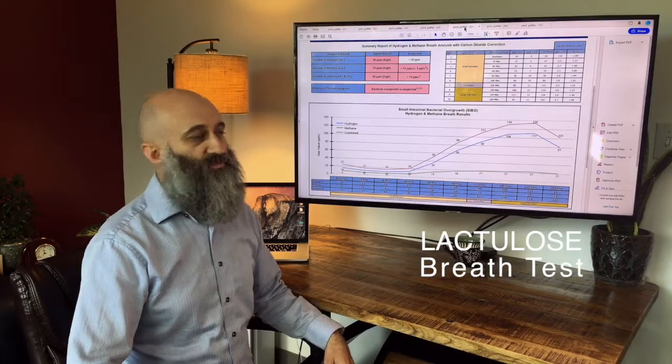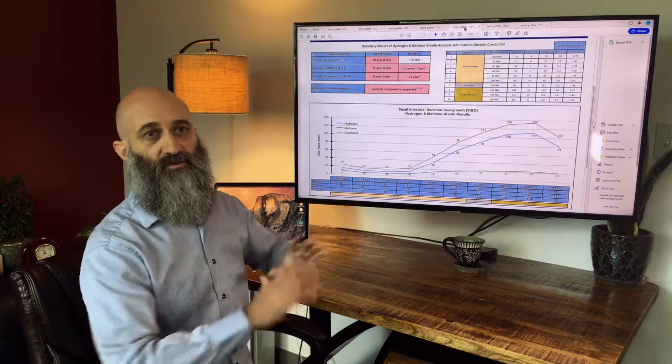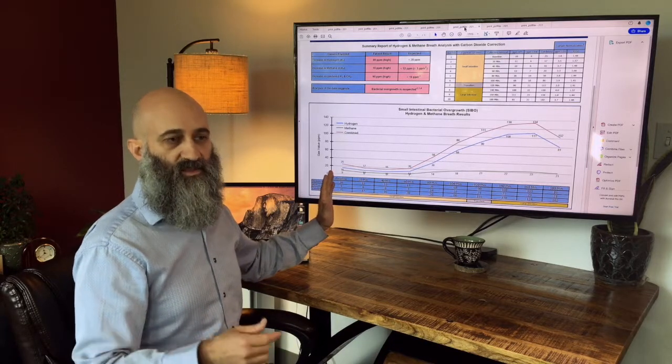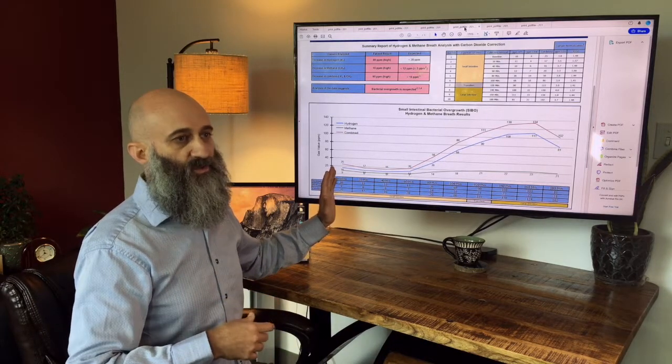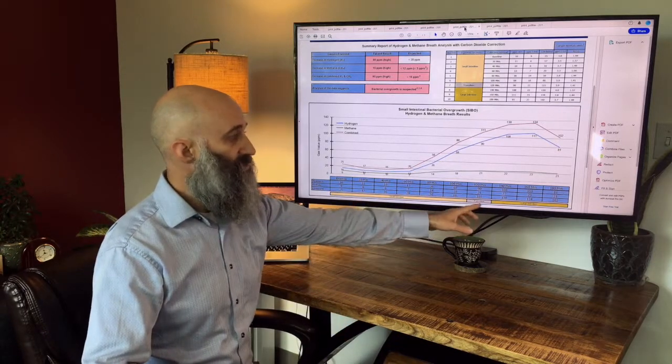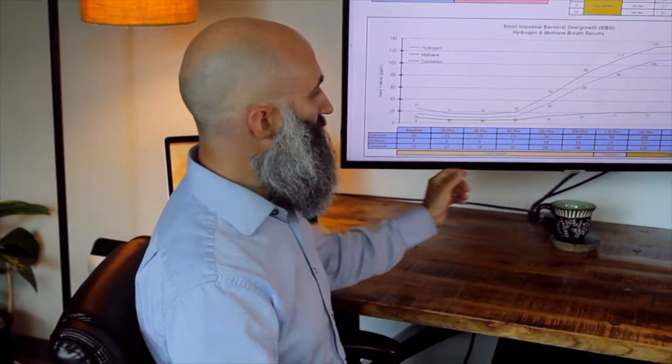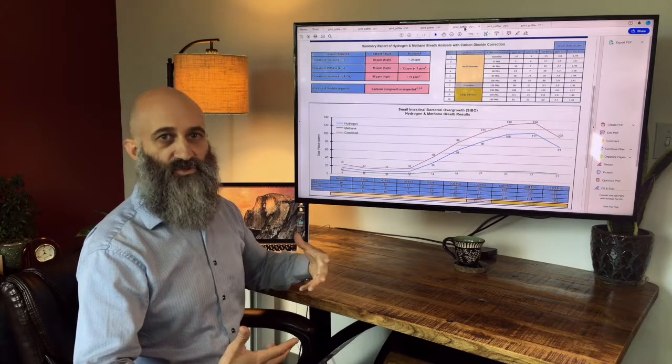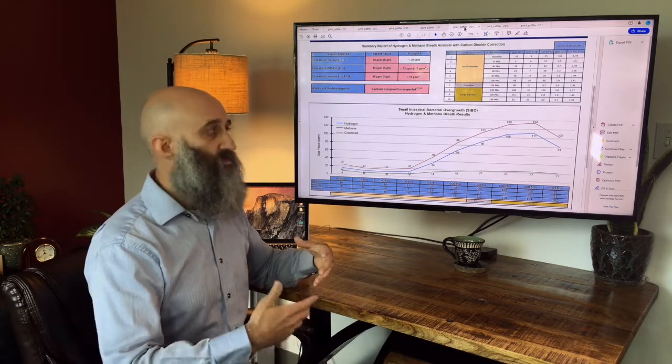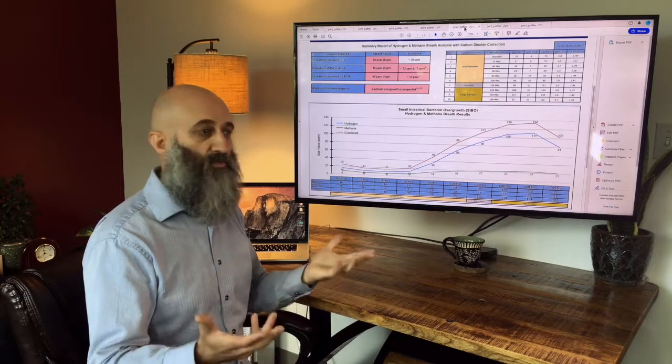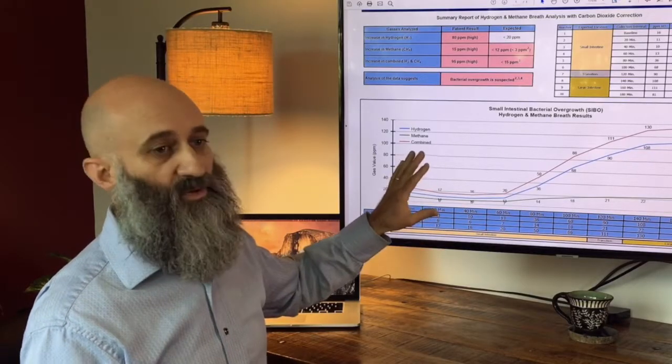This is an example of a lactulose breath test result. When you do this breath test you do a baseline first to see where you're at, then you drink the lactulose solution. It's a sugar that goes into the small intestine and then your large intestine, probably around the two-hour point. If you see on this graph here, the small intestine's along the bottom, then the transition to the large intestine. We should see normally mostly a flat line along the bottom here because in the small intestine we shouldn't have a lot of bacteria at all. When we get to the large intestine, then we want to see a big arch because that's a biodiverse microbiome.